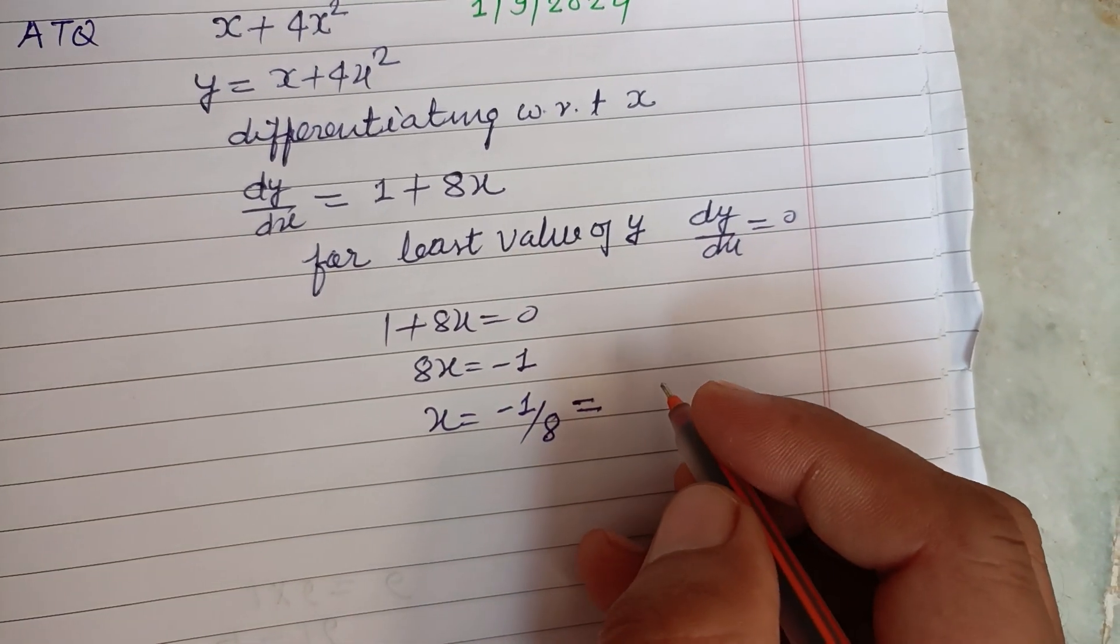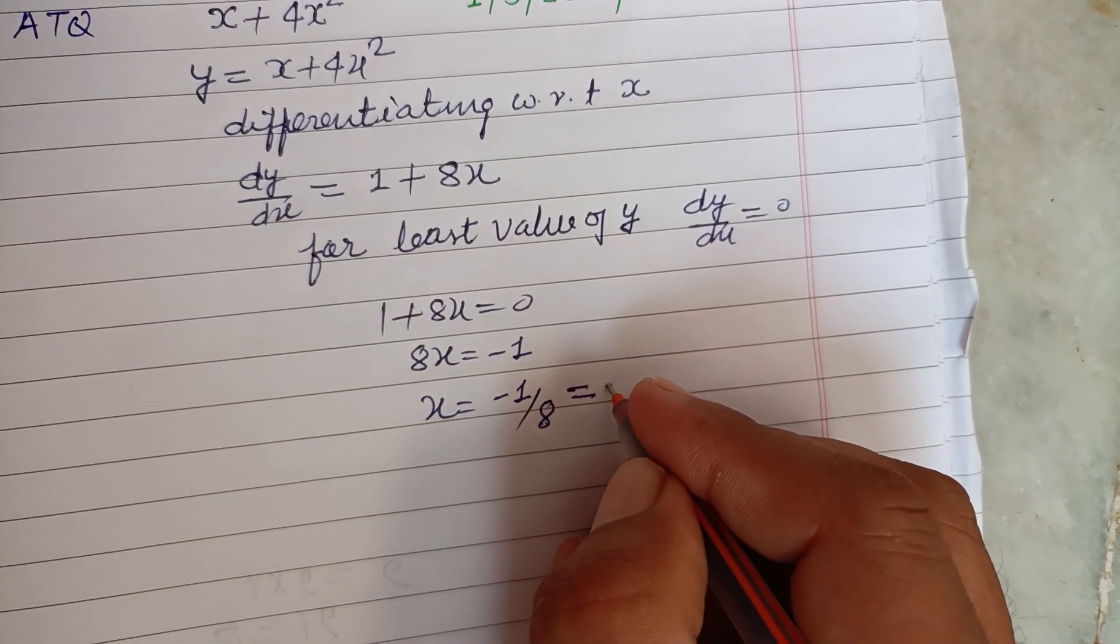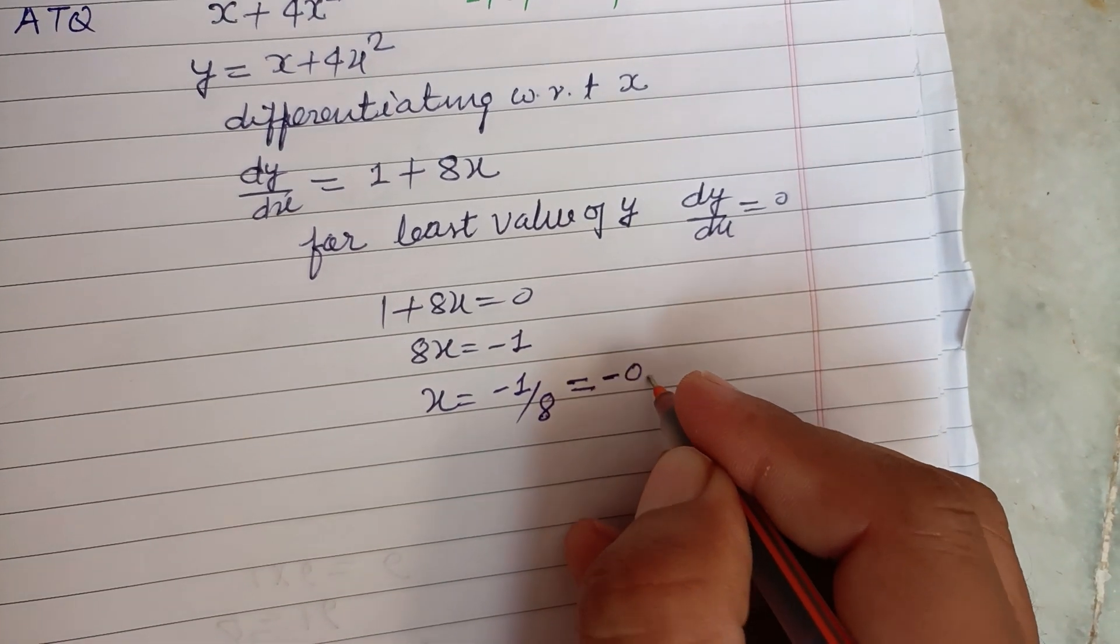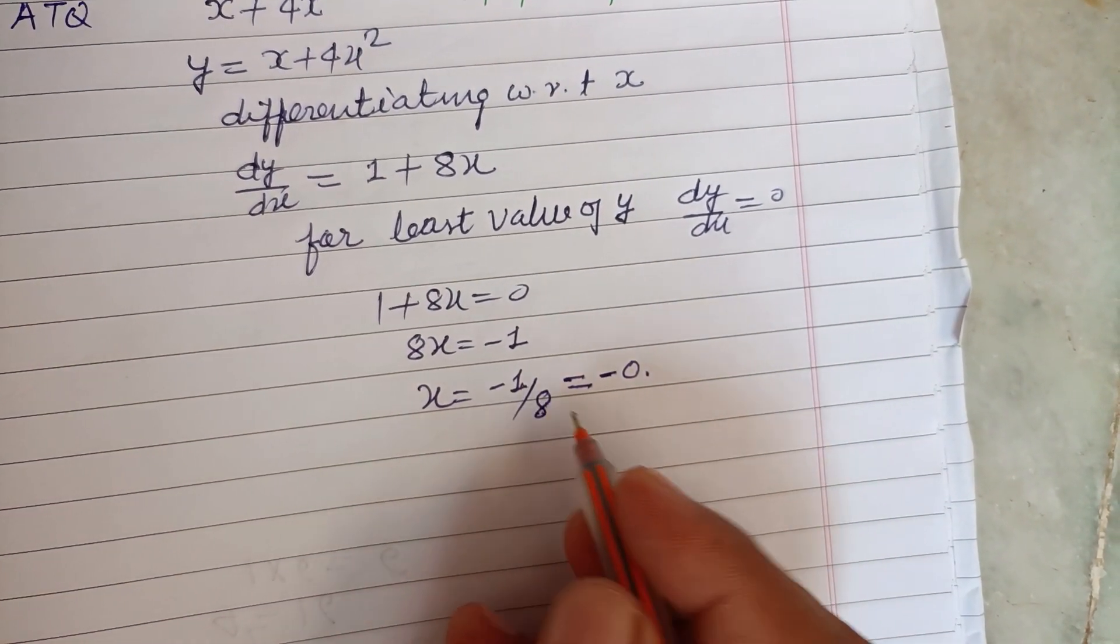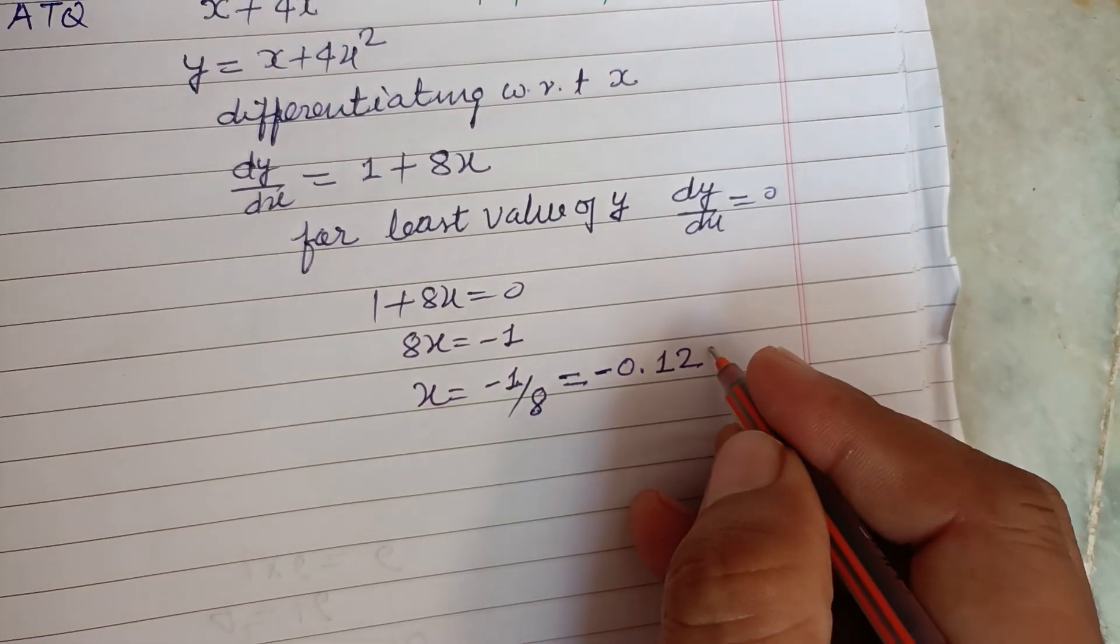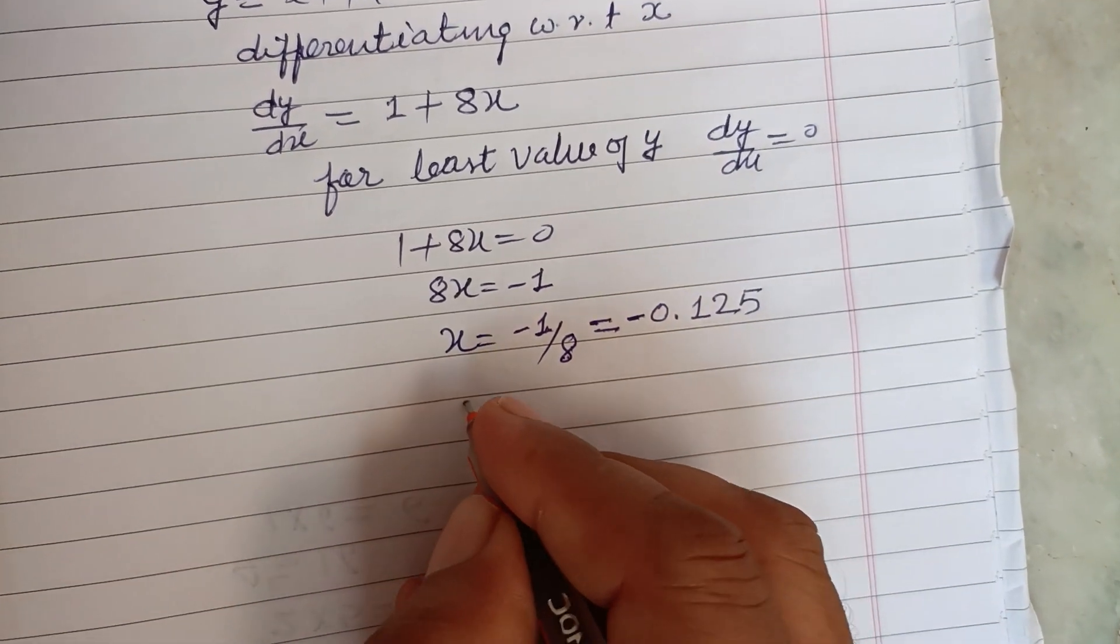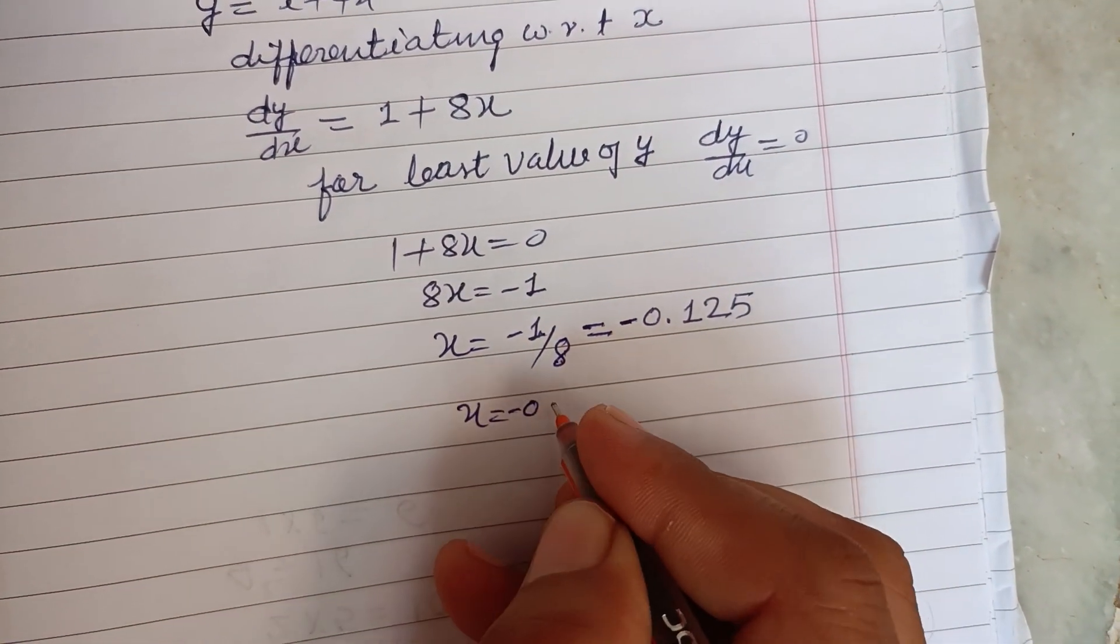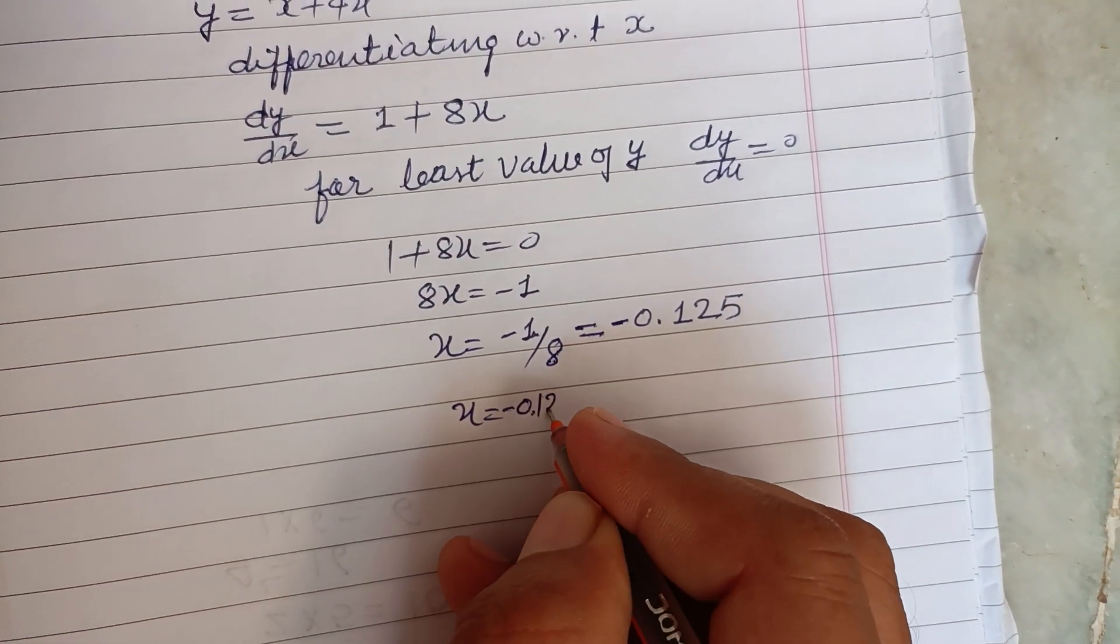When you divide 1 by 8, you get minus 0.1... 8 into 1 is 8, now 2 remains, 8 into 2 is 16, now 4 remains, 8 into 5 is 40. So X is minus 0.125.